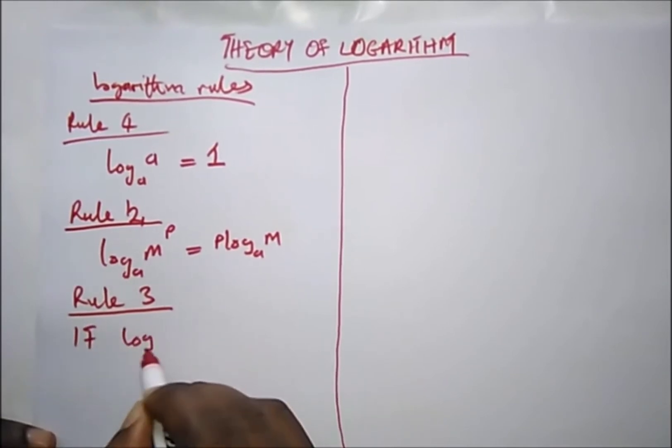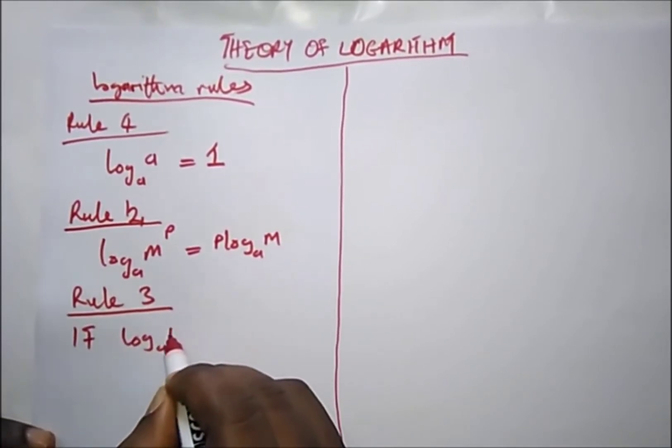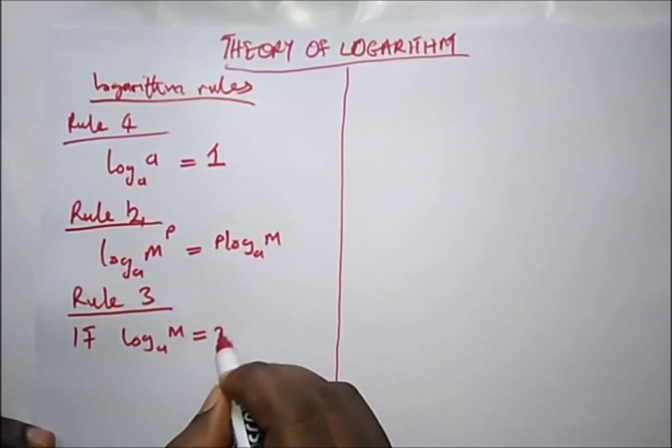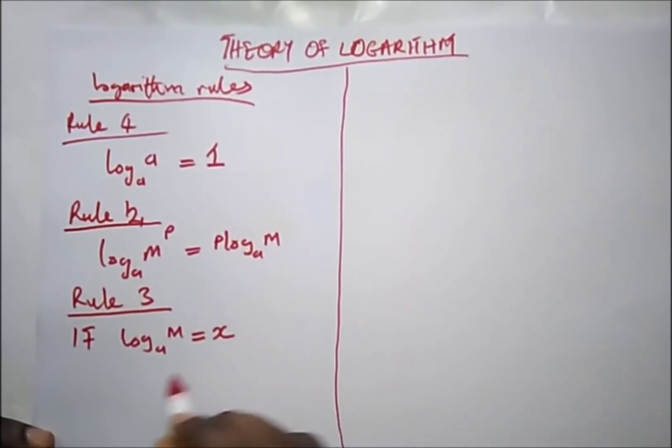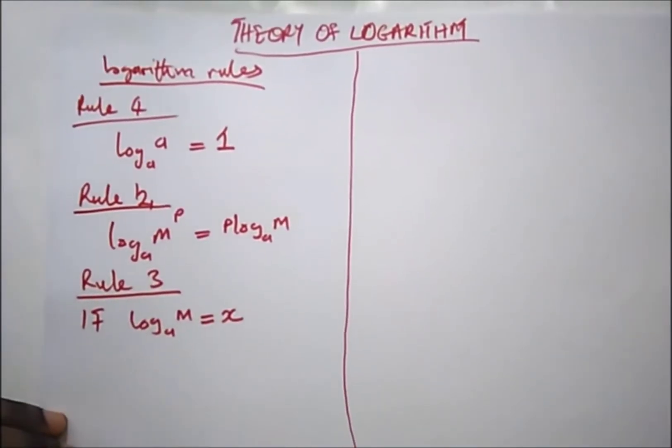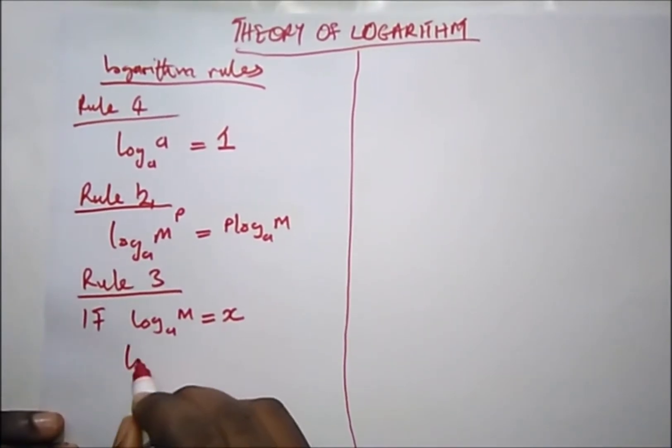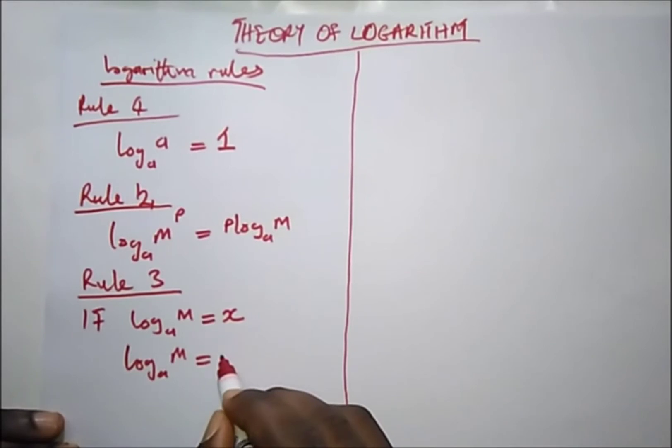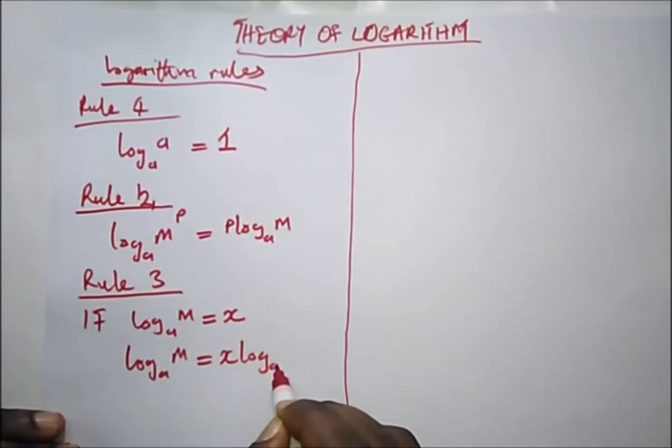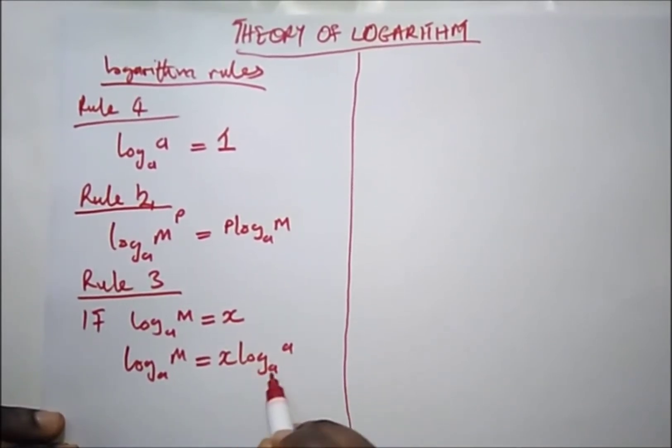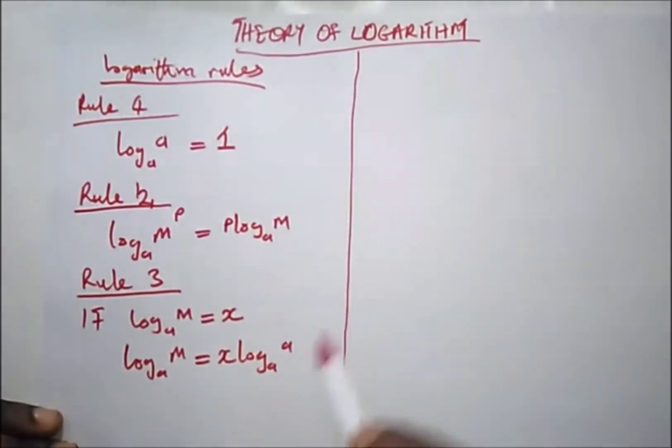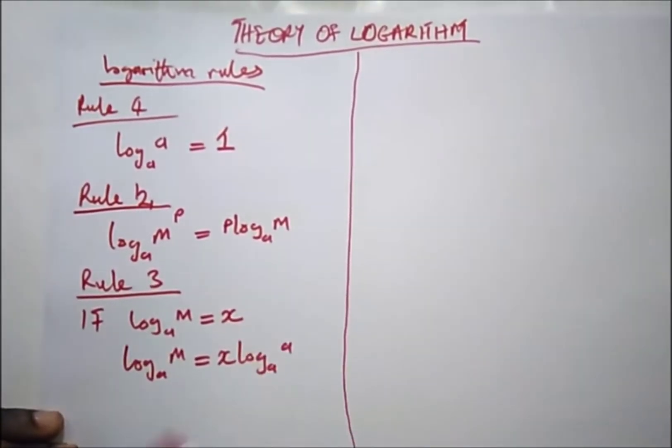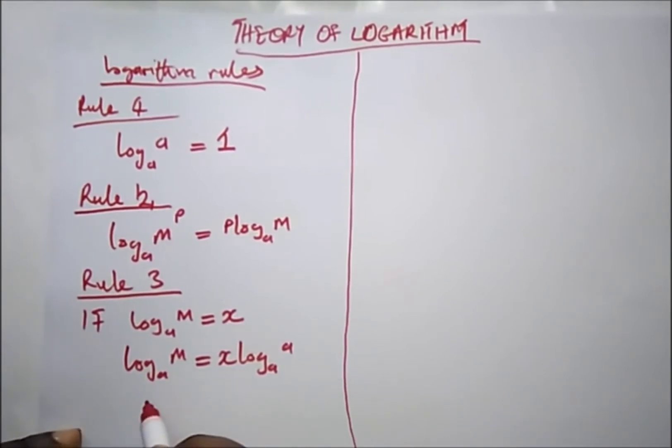Now our third rule: if log base a of m is equal to x, then we have log base a of m equal to x times log base a of a. Remember, log base a of a is the same thing as 1, so putting it here is the same as x, because log base a of m equals x times 1, which is x. So what will happen is this particular log will cancel.